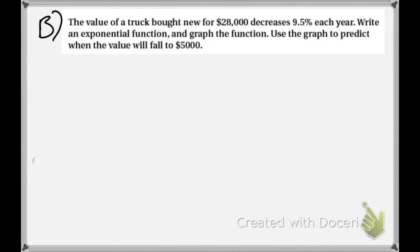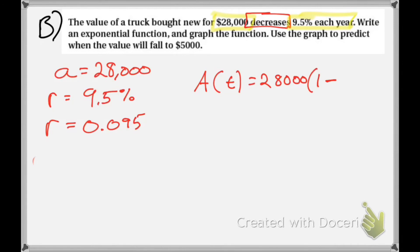All right, example B. Let's find the value of the truck bought new for $28,000. So right away I know what my initial amount is. It's $28,000. Well, my truck decreases, so I have decay, decreasing in value by 9.5 percent every year. So my rate is 9.5 percent, which converted as a decimal is 0.095. So my equation: A(t) is equal to 28,000 times one minus, now it's minus because it decreases in value, times 0.095, which gives me A(t) is equal to 28,000 times 0.905. I forgot my t up here, raise to the power of t.